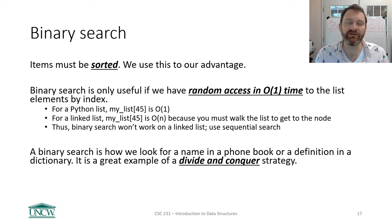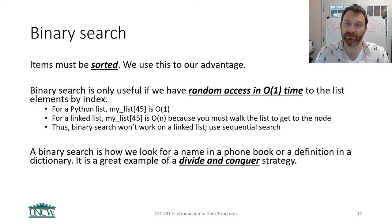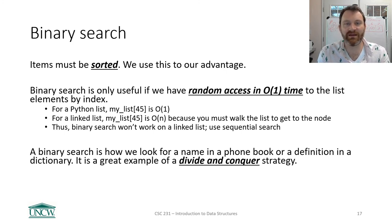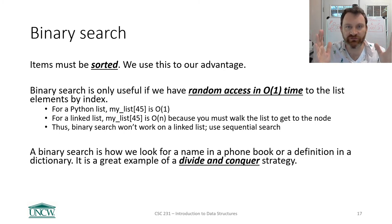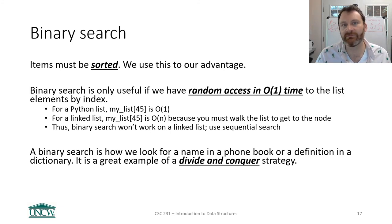Binary search is how you look for a name in a phone book or a definition in a dictionary. You open it to the middle, see you're at letter K, and you're looking for 'Frankfurter,' so F comes before L — go halfway between the beginning and the middle, and keep splitting in half. We call this approach of shrinking the problem a divide and conquer strategy — make the problem smaller. It appears a lot in computer science, and this is maybe the first divide and conquer algorithm you've encountered.